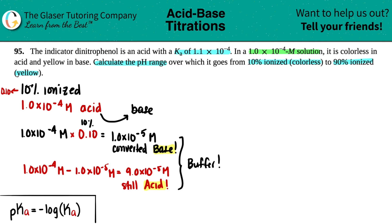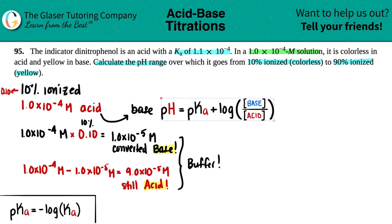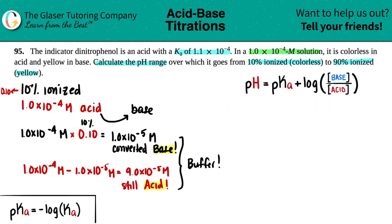And we love to use the Henderson-Hasselbalch formula for buffers. I don't like to use balanced equations because it's just easier this way. This is the Henderson-Hasselbalch equation. We can find that initial pH value: pH equals pKa plus the log of the concentration of the base over the acid. The base is going to be that 1.0 times 10 to the negative fifth, and the acid that's left over because of the 10% is 9.0 times 10 to the negative fifth.